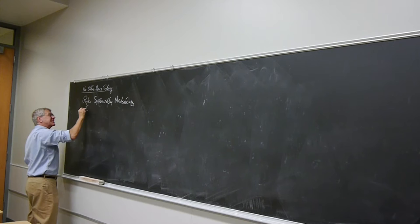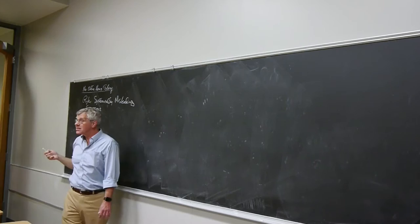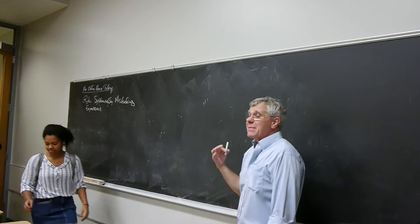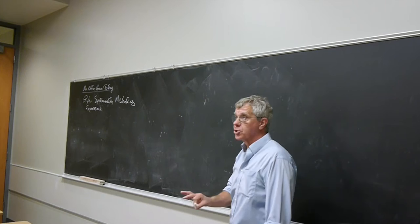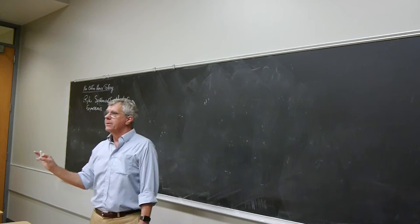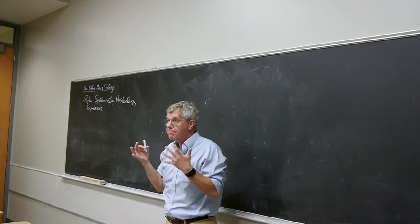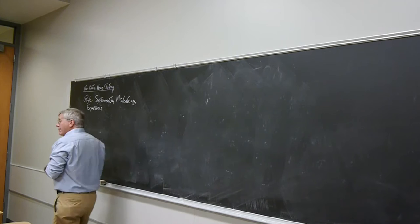What do we mean by systematically misleading expressions? It's really an expression that has a certain surface form, a grammatical form, but then also has a deep underlying logical form, and those two are different. It is fundamental from Frege onwards to assume that sentences have a logical form, and that those logical forms don't necessarily match the overt forms of things in English.